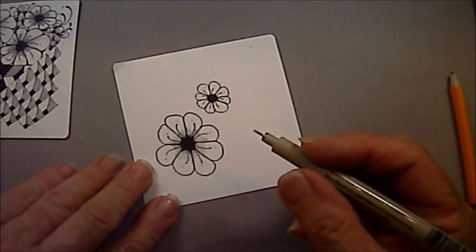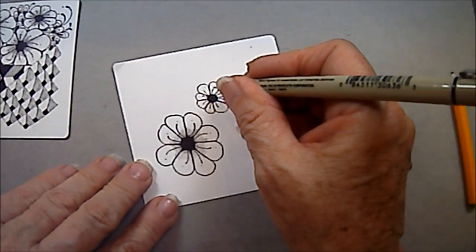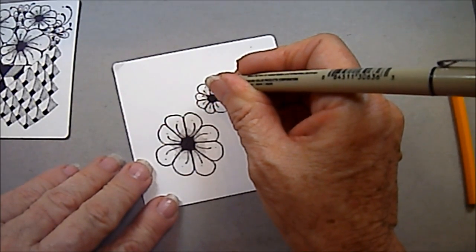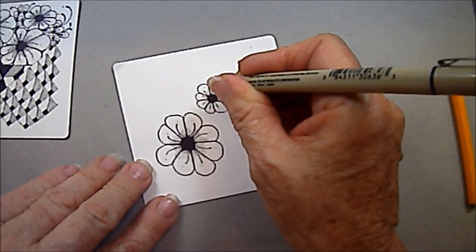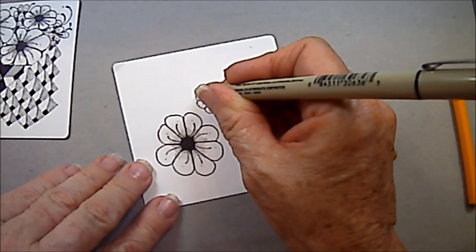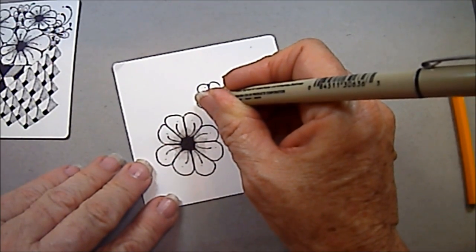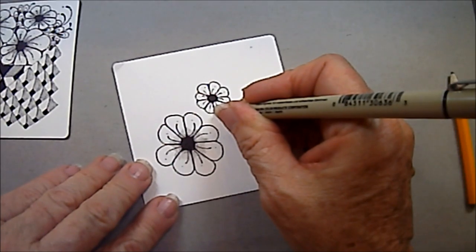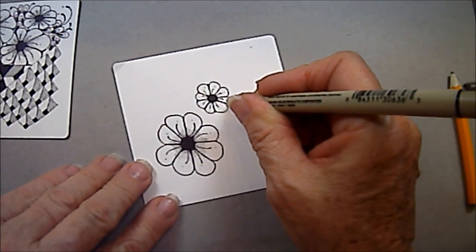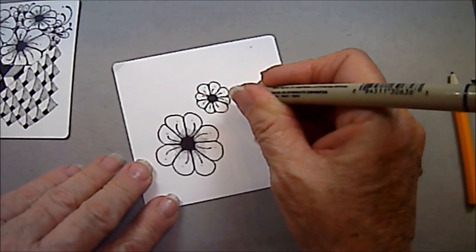And there you have it. Is that not simple? Now, if you find that you have a little space in between here, I've also done a little rounding right here.